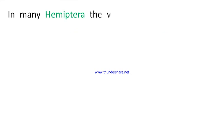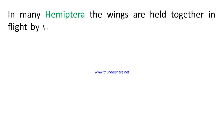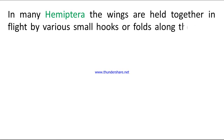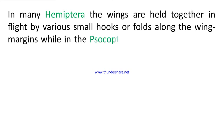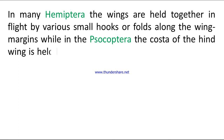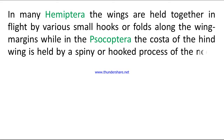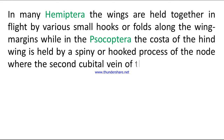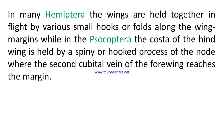In many Hemiptera, the wings are held together by various small hooks or folds along the wing margins. While in the Psocoptera, the costa of the hind wing is held by a spiny or hooked process of the node where the second cubital vein of the fore wing reaches the margin.